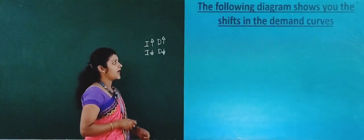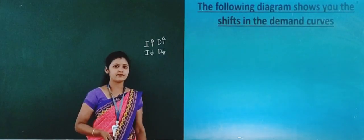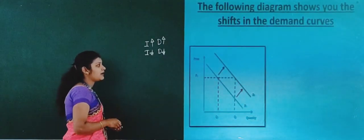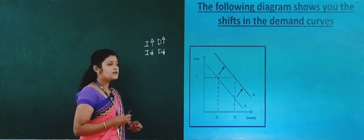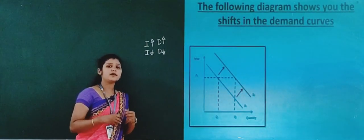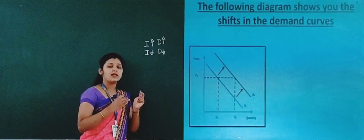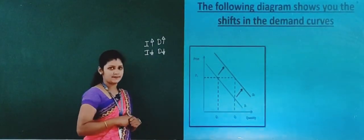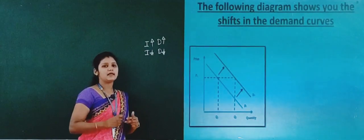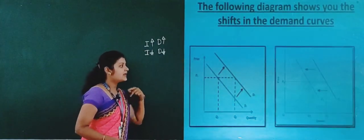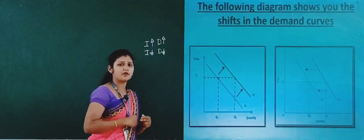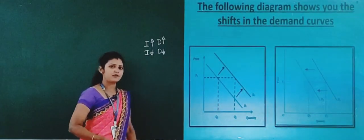Now let's look at the diagram showing shifts in the demand curve. The demand curve shifts rightward when there is an increase in the income of the consumer, because the consumer's demand also increases. An increase in demand means a shift to the rightward, and a decrease in demand means a shift to the leftward.